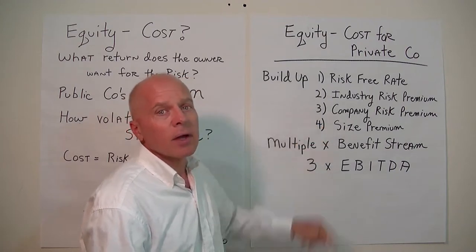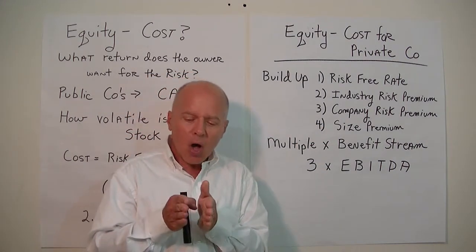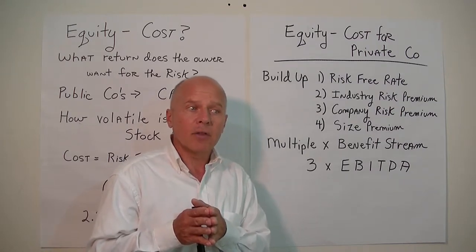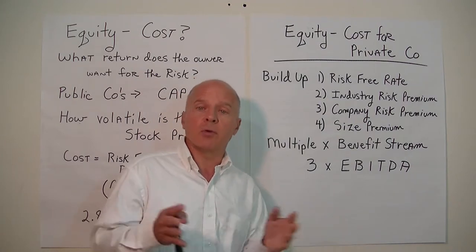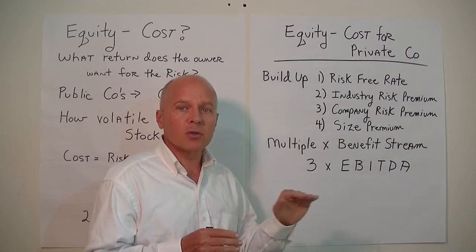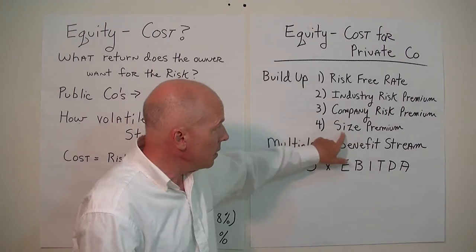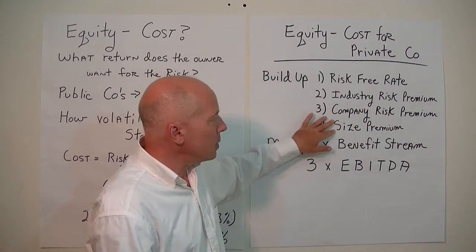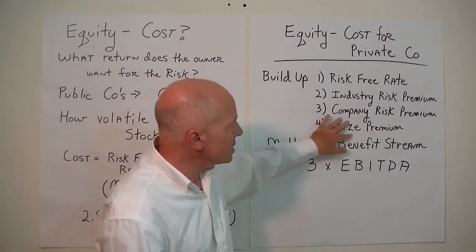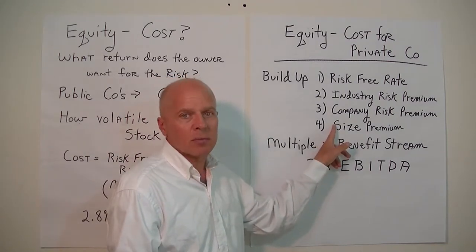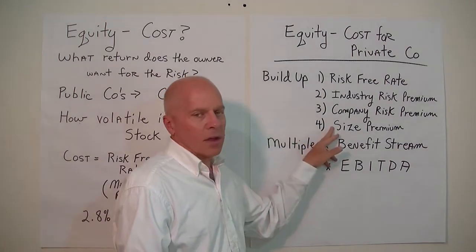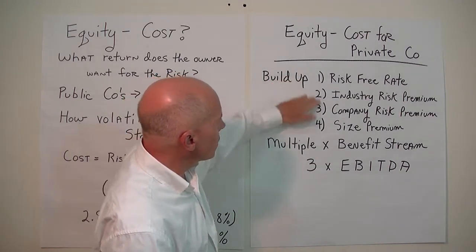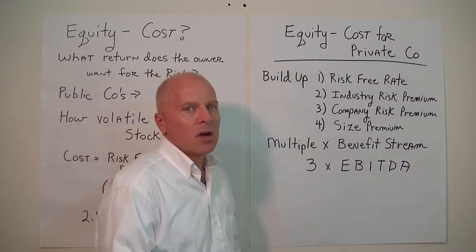There's also a sizing premium you can add because small companies have very high risk — the probability that a small company will go out of business five years from now is very high. However, if the company has 100 or 500 employees and $10 million in sales, the risk premium goes down. The smaller the company, the higher the risk. As you get bigger as a private company, you may not even need to add a sizing premium.